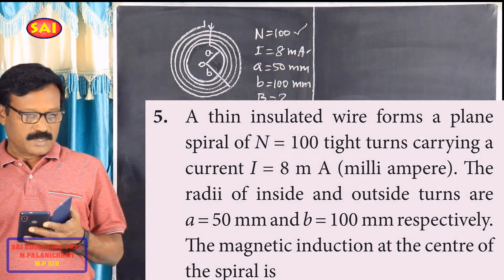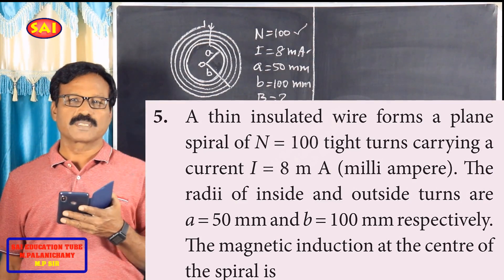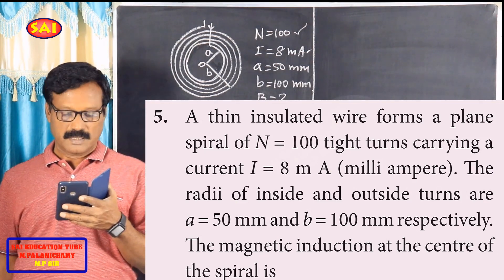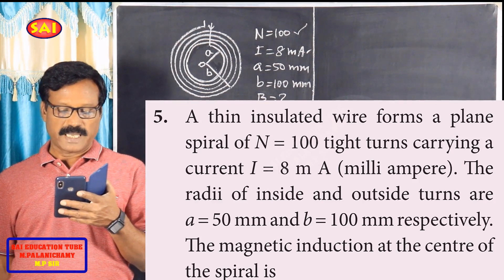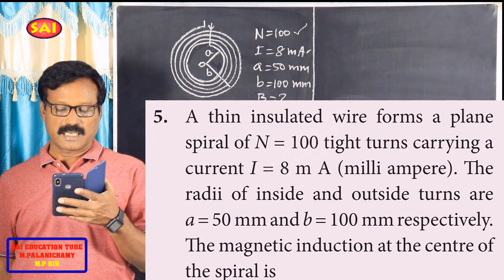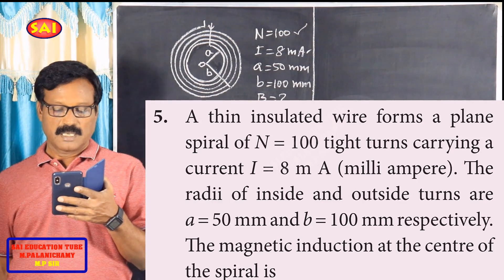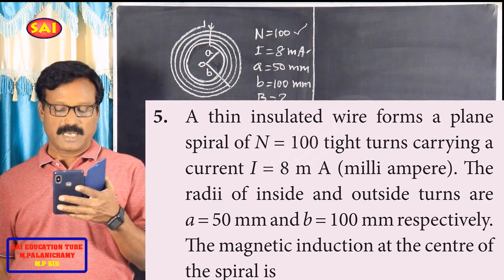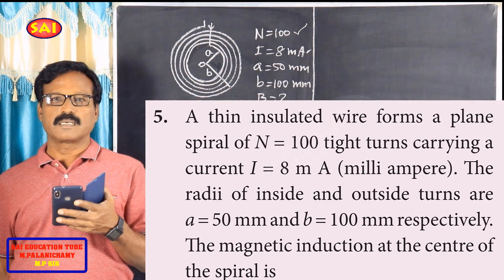Welcome. In this video, 12th standard physics unit 3, magnetism MCQ multiple choice question. A thin insulated wire forms a plane spiral of N equal to 100 tight turns carrying a current I equal to 8 mA. The radii of inside and outside turns are a equal to 50 mm and b equal to 100 mm respectively. The magnetic induction at the centre of the spiral is?